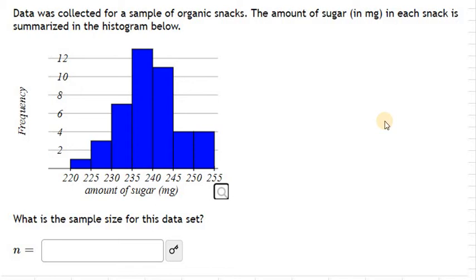Data was collected for a sample of organic snacks. The amount of sugar in milligrams in each snack is summarized in the histogram below. Histogram is used to display or represent quantitative data. It could be discrete data or it could be continuous data.